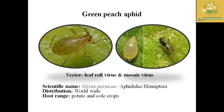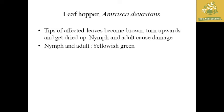The next pest is the leafhopper, with the scientific name Amrasca devastans. It affects the tips of leaves, causing them to become brown, turn upward, and dry. Both nymphs and adults cause damage. The major symptom is yellowing of the plant and drying up of leaves from the upper portions. The nymphs and adults are yellowish green in color.